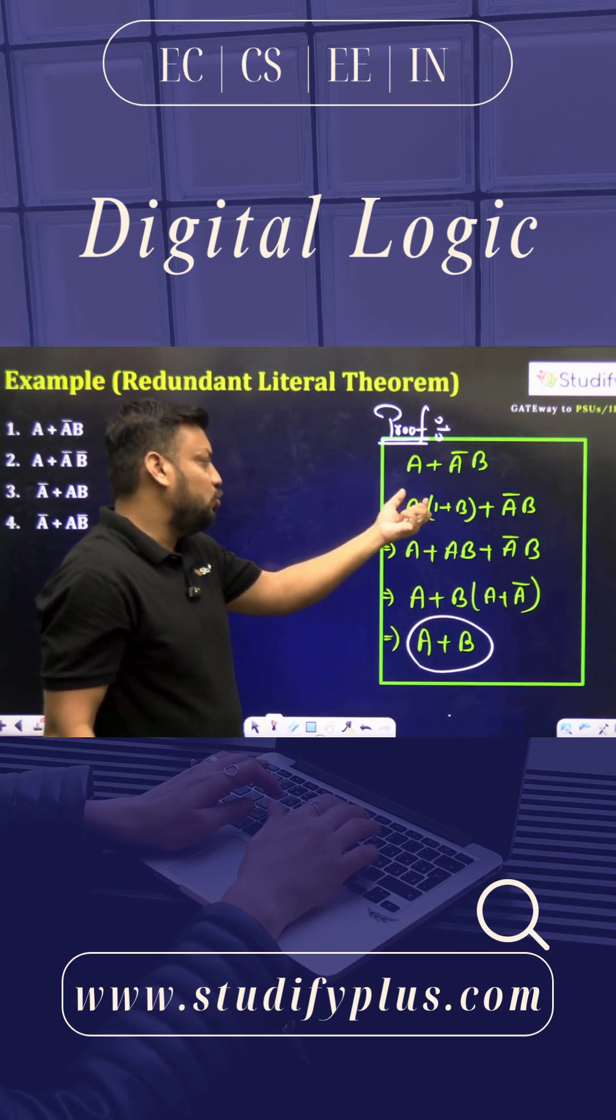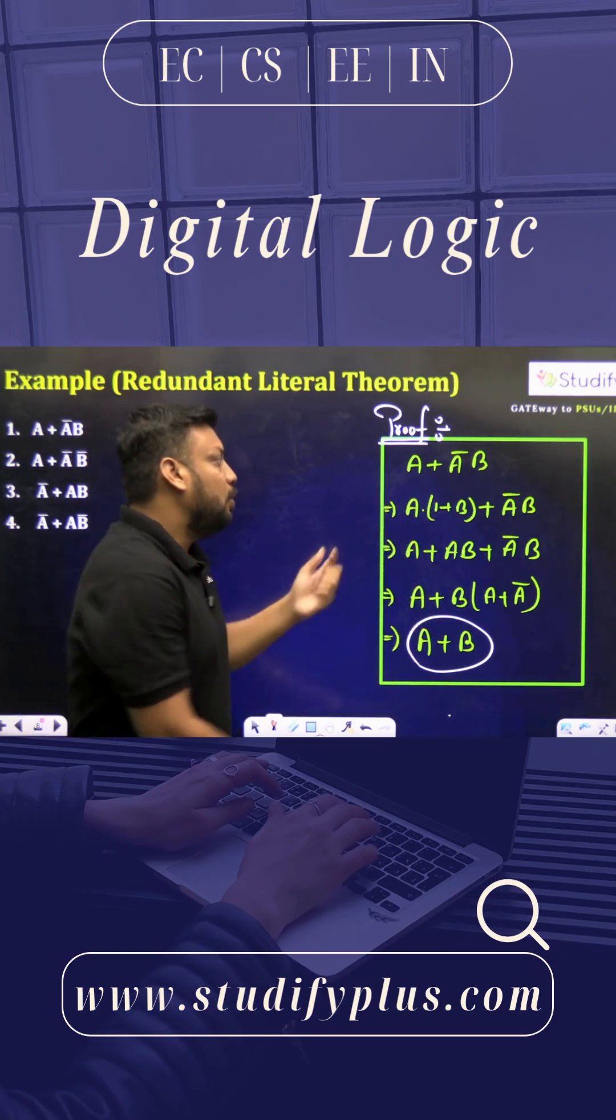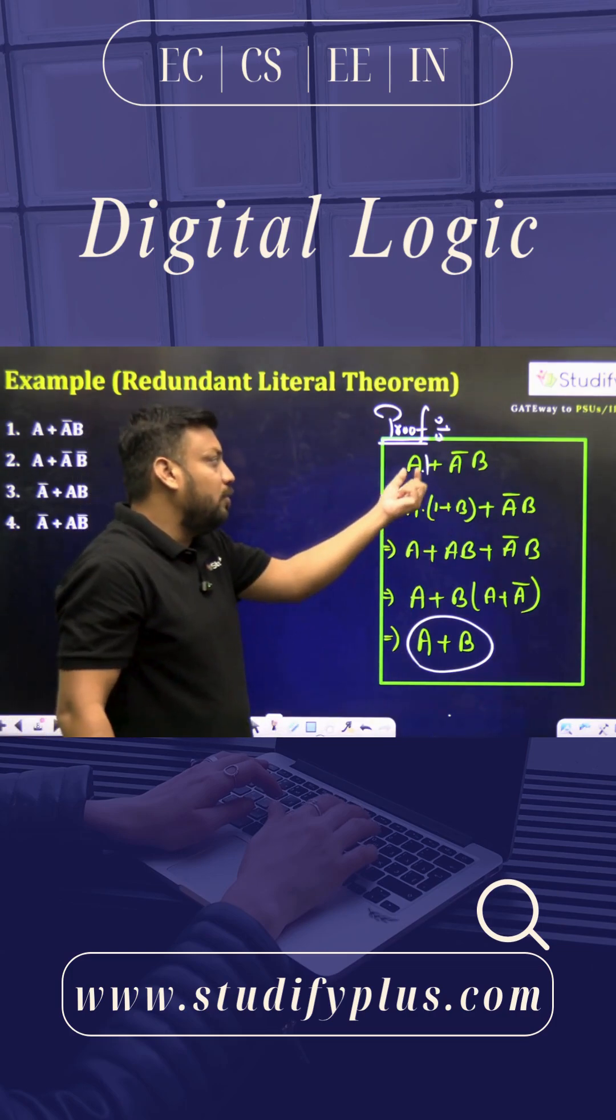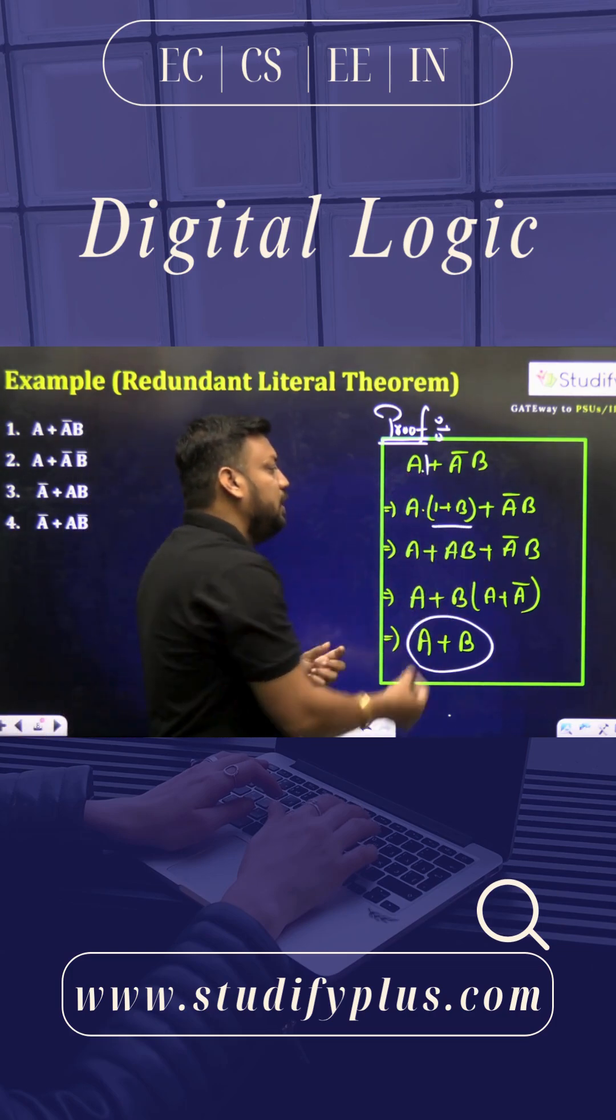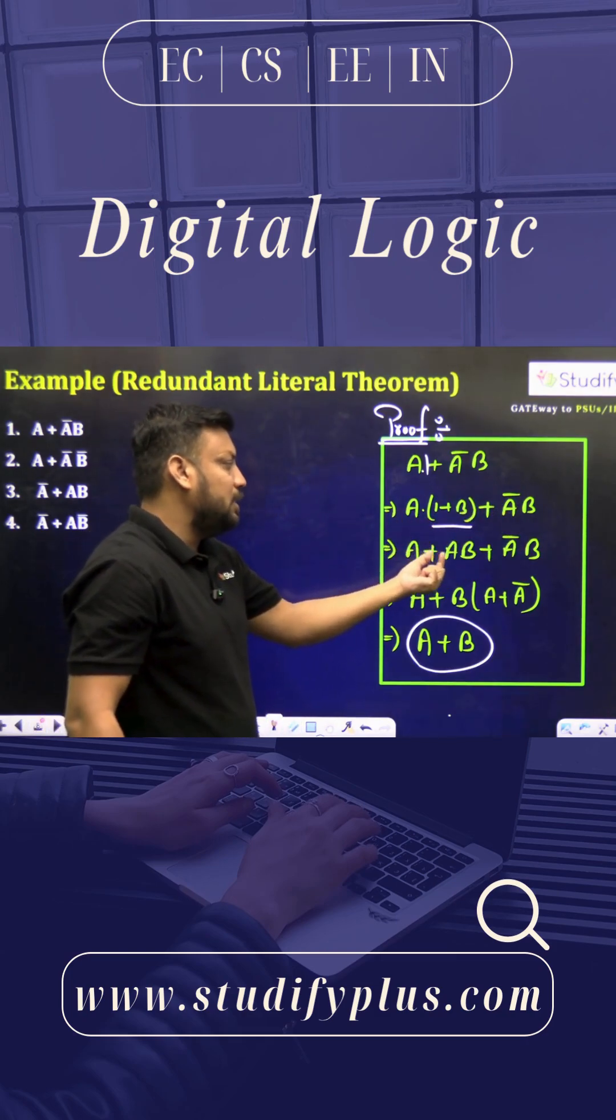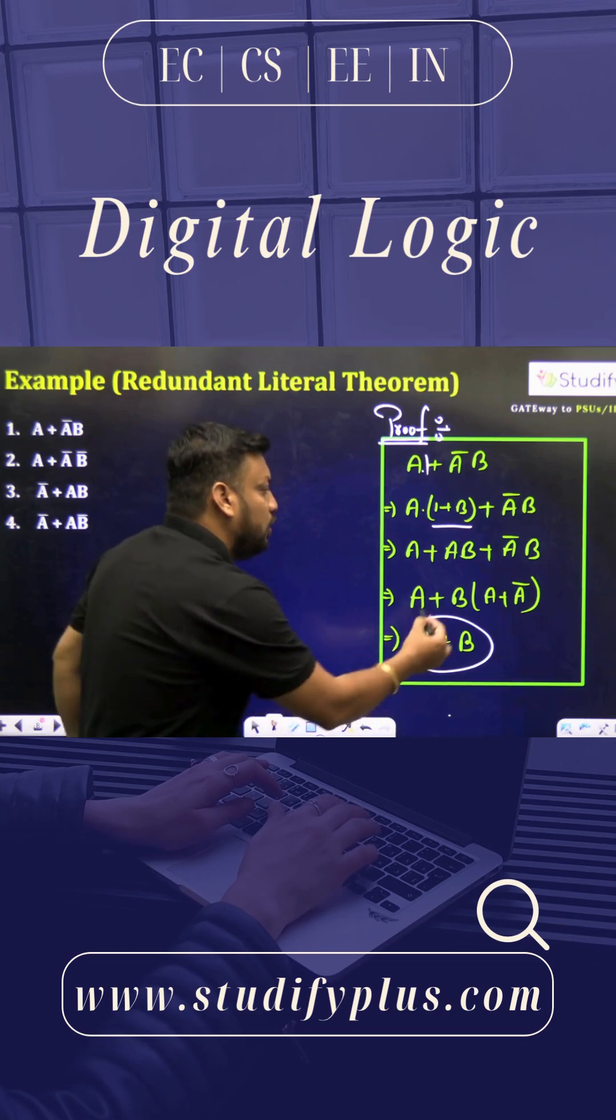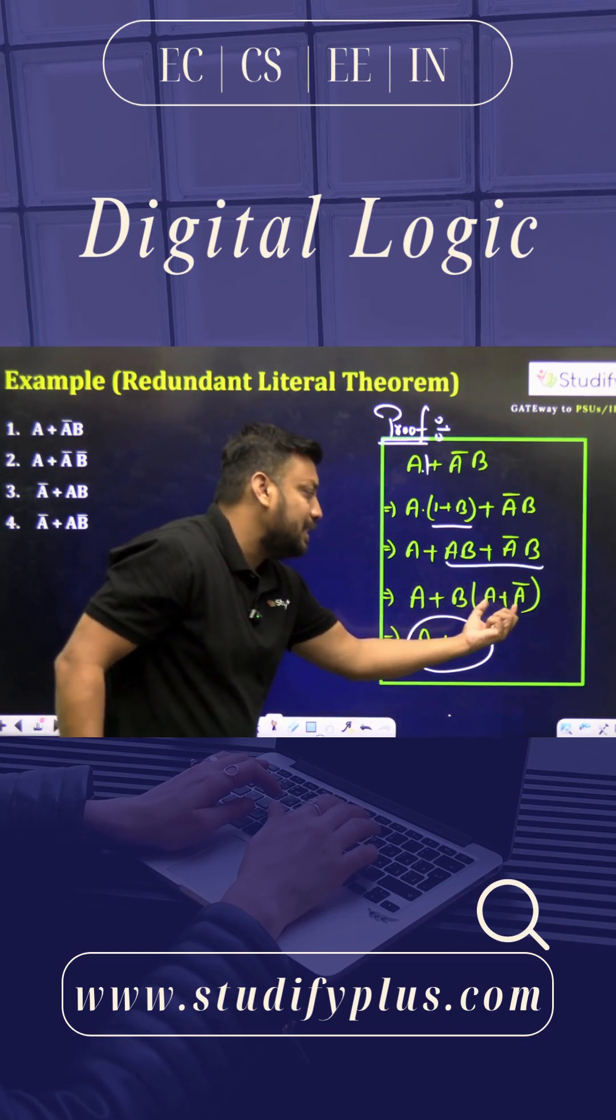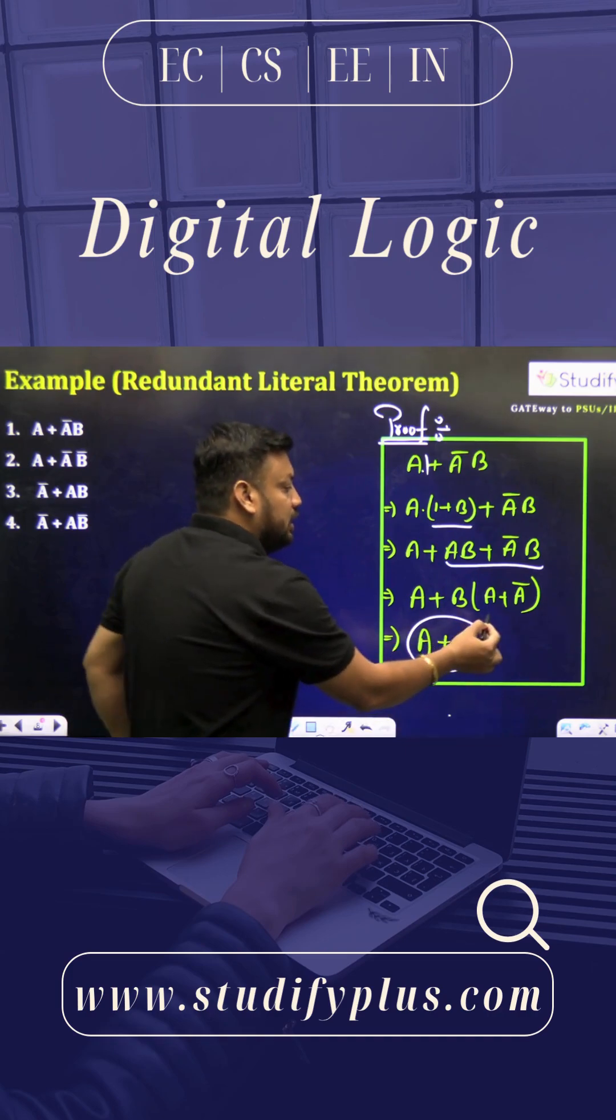Because A times 1 is always A, you can write A·1 here and A̅B as it is. Once you open the bracket, you'll get A + AB + A̅B. Now, in the last two terms, when you take B common, you'll get inside the bracket A + A̅, which is nothing but 1.